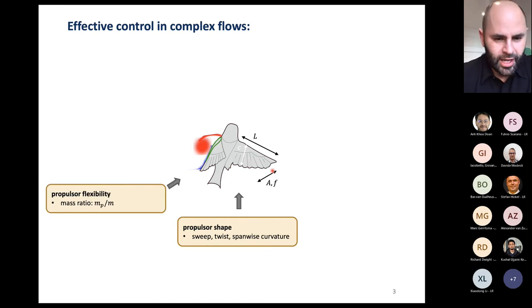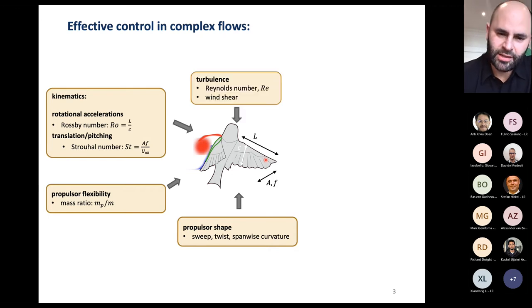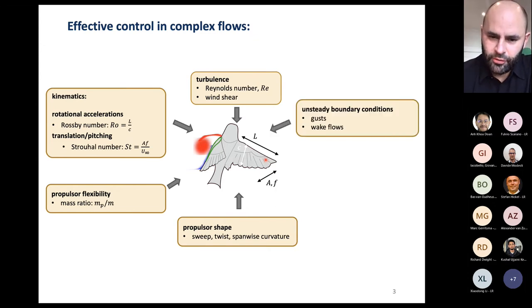So of course there's some common characteristic length scales that we can think about. But beyond that, there are active sweep, twist, span-wise curvature that is performed on these bodies. So essentially they're morphing bodies. They're flexible. They have probably an adaptive flexibility if you think about how their muscles control these feathers. And then you have all kinds of interesting effects, sort of rotational stability of these vortices.